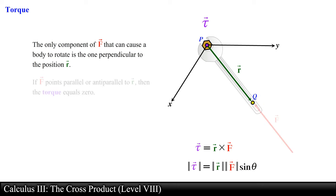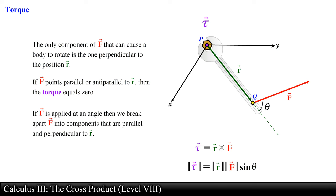If the force vector points parallel or anti-parallel to the position vector r, this force will not cause the wrench to rotate, so it will not tighten or loosen the bolt. On the other hand, if the force is applied at an angle, then we break apart the force vector into components that are parallel and perpendicular to the position vector. In any case, it is the orthogonal component of the force that causes the wrench to rotate.